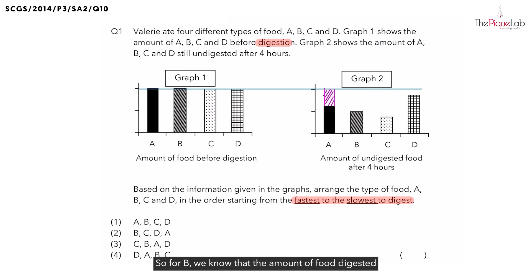Now, what about C? For C, the amount of food digested will be represented by this red colored shaded area. And lastly, for D, the amount of food digested will be represented by this green colored shaded area.